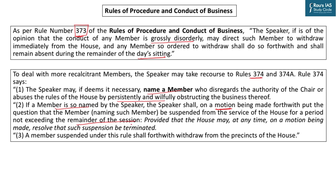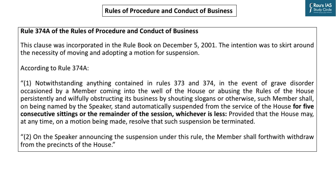In a representative democracy, suspension of MPs or MLAs is a very serious issue. Under Lok Sabha rules, the Speaker can suspend an MP for the remainder of the session after a motion is passed under Rule 374. It is mentioned in Rule 374 itself that at any time, on a motion passed by the House, the suspension can be terminated. Notably, the Speaker suspends the MP, but the House terminates the suspension — the Speaker cannot terminate it alone. In 2001, an amendment added Rule 374A to do away with the requirement of passing a motion first.